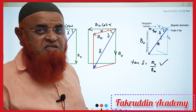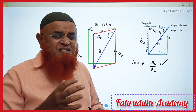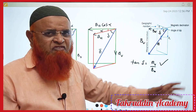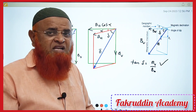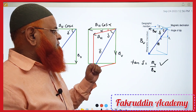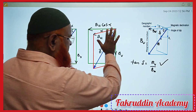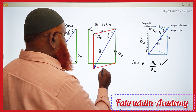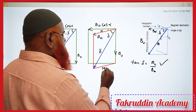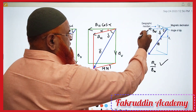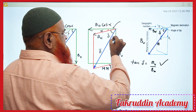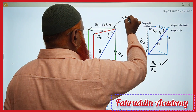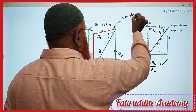But what do you mean by apparent dip? For that you have to imagine some other plane, other than the magnetic meridian and other than the geographic meridian — a new imaginary meridian plane.